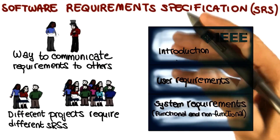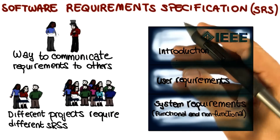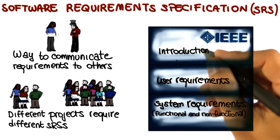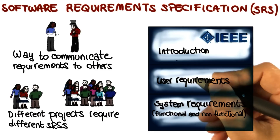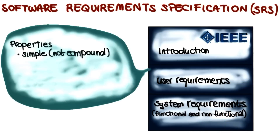To conclude the lesson, I want to point out, and in some cases recap, a few important characteristics that requirements should have. First of all, requirements should be simple, not compound. Each requirement should express one specific piece of functionality that the system should provide. Requirements should also be testable — I want to stress this because it is a very important point. Untestable requirements, such as 'the system should be fast,' are useless.